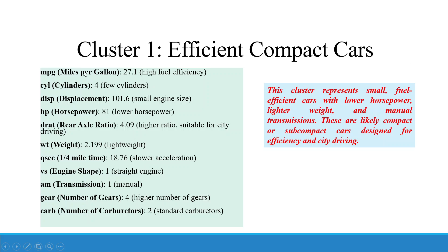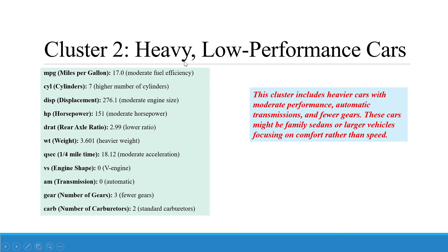We now give names to each cluster. Cluster 1 can be named 'Efficient Compact Cars' — this cluster represents small, fuel-efficient cars with lower horsepower, lighter weight, and manual transmissions. These are likely compact or subcompact cars designed for efficiency and city driving. Cluster 2 is 'Heavy, Low-Performance Cars' — this cluster includes heavier cars with moderate performance, automatic transmissions, and fewer gears. These might be family sedans or larger vehicles focusing on comfort rather than speed.